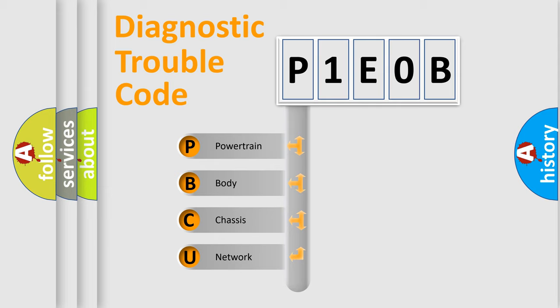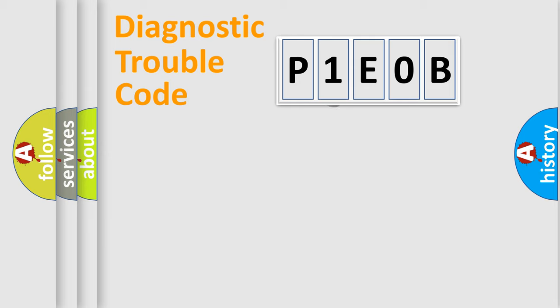We divide the electric system of automobile into four basic units: Powertrain, Body, Chassis, and Network. This distribution is defined in the first character code.